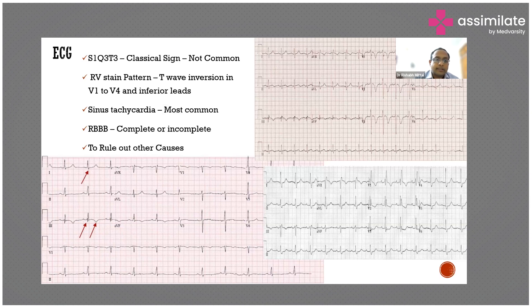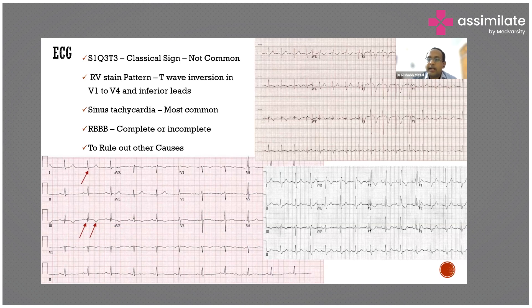The second ECG finding is RV strain. Because the RV has dilated and there is RV dysfunction, the T-waves will be inverted in V1 to V4 and in the inferior leads. The most common sign described is sinus tachycardia, but it is present in only 20 to 30 percent of patients. Absence of sinus tachycardia is not a criterion to rule out pulmonary embolism.